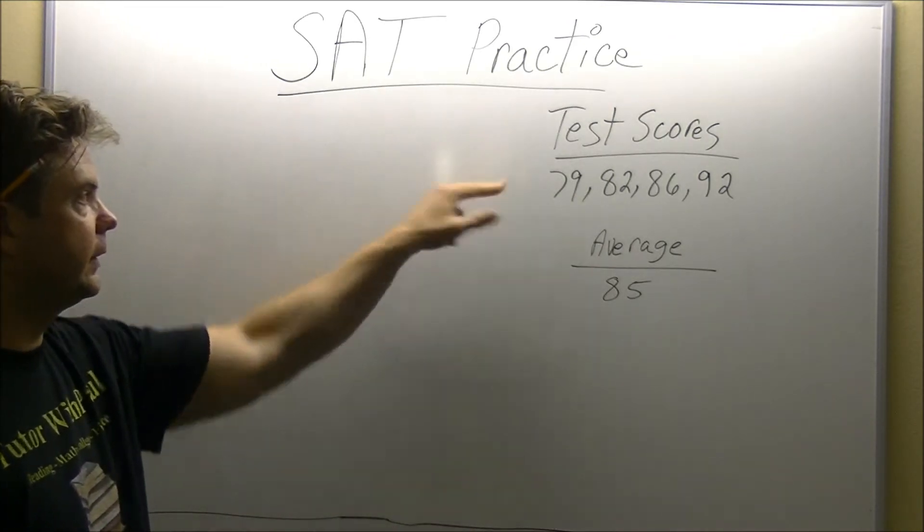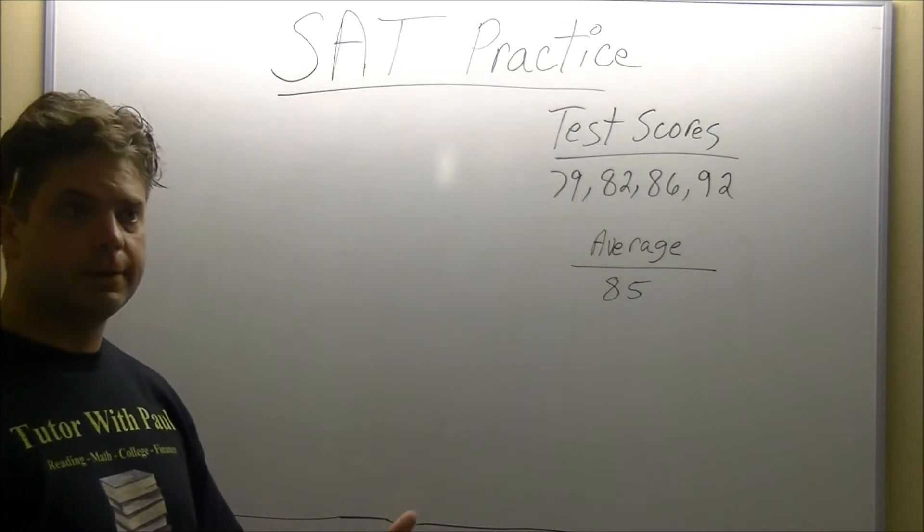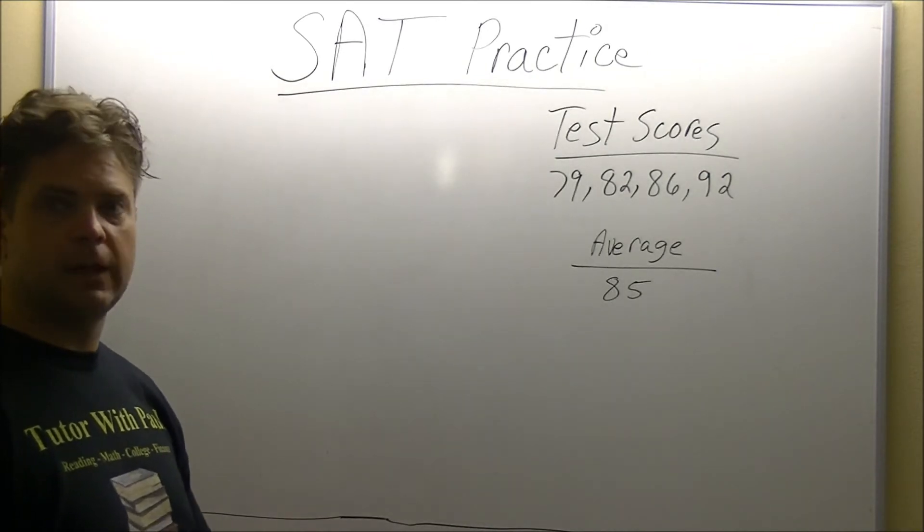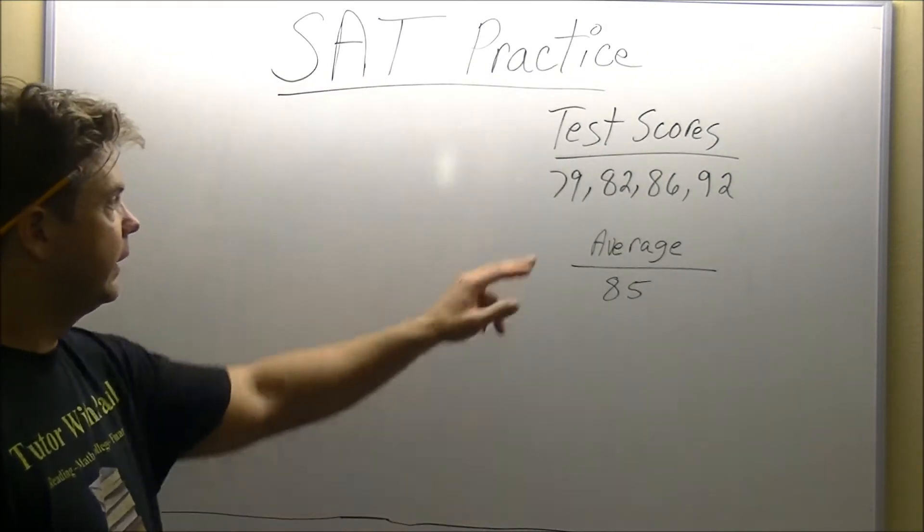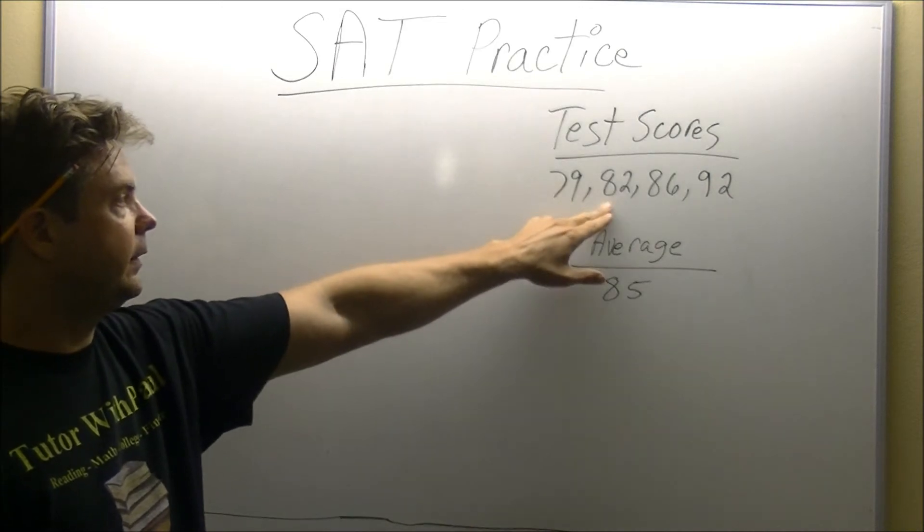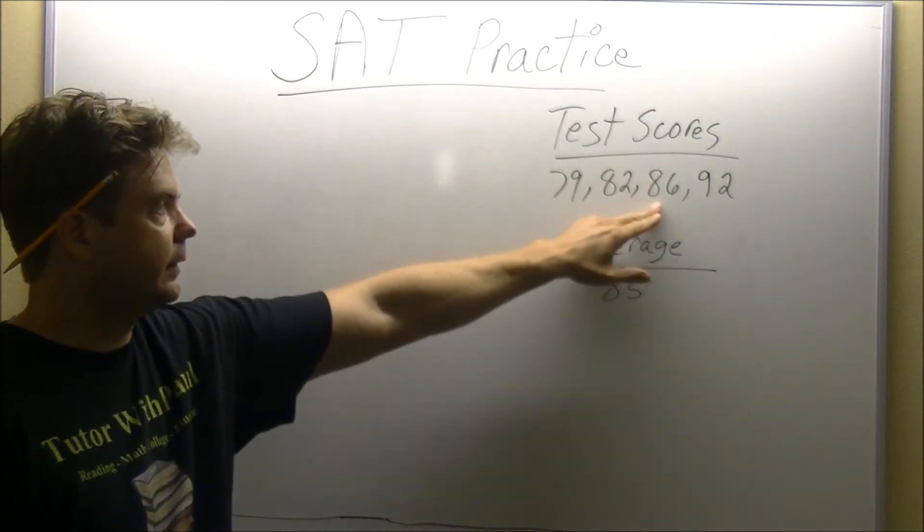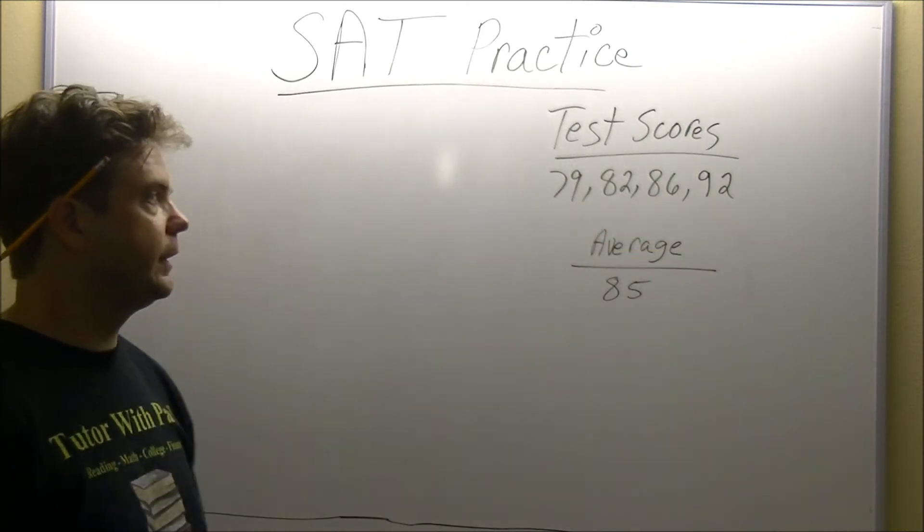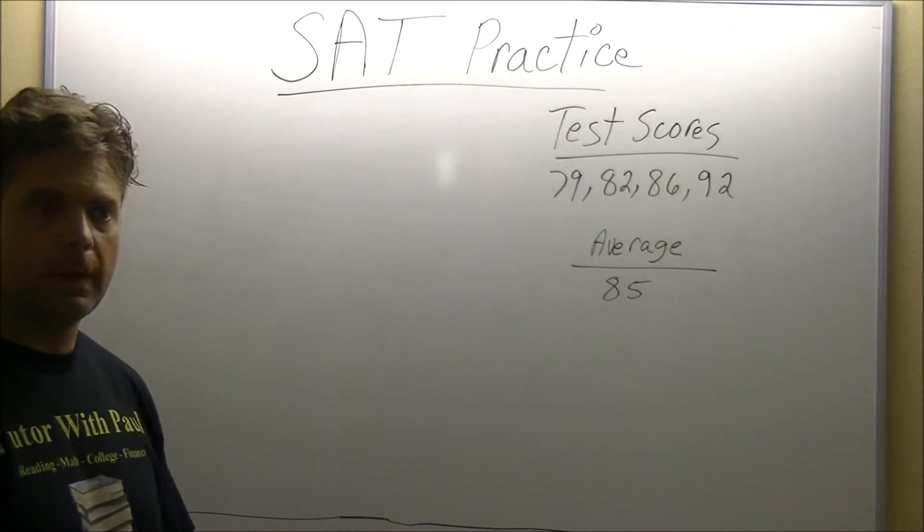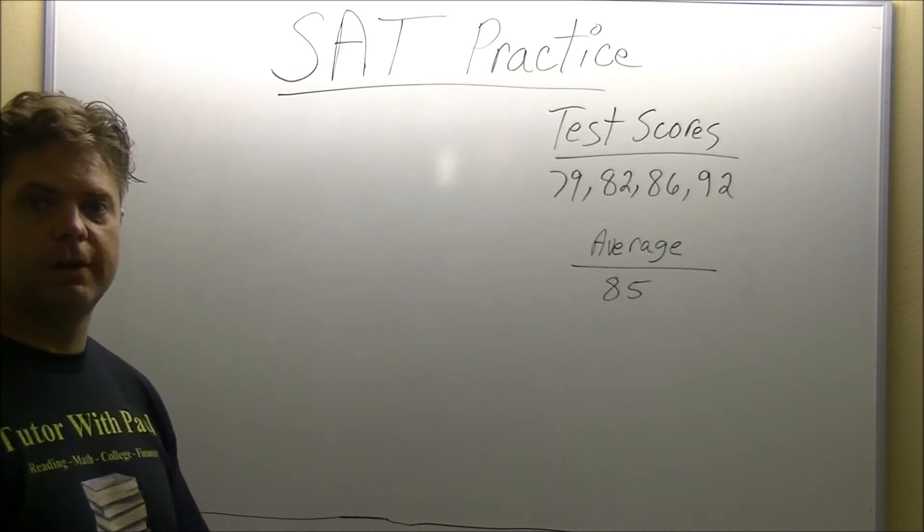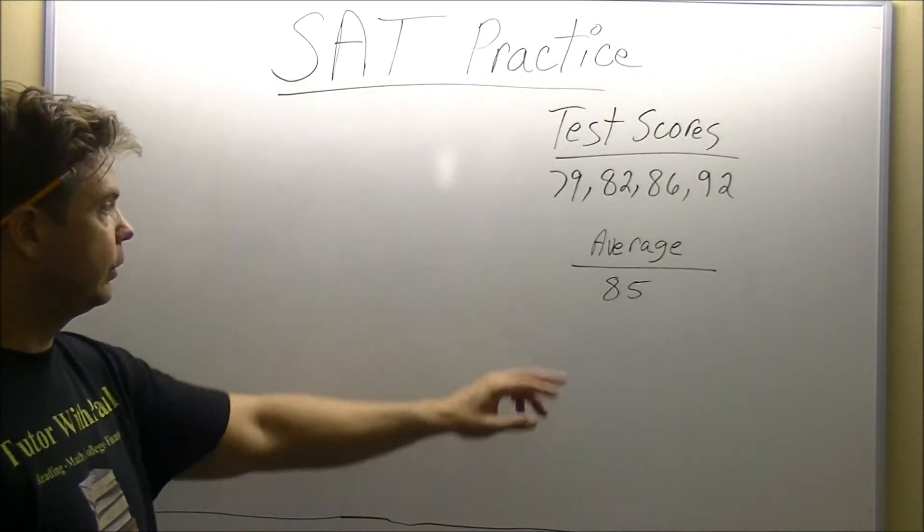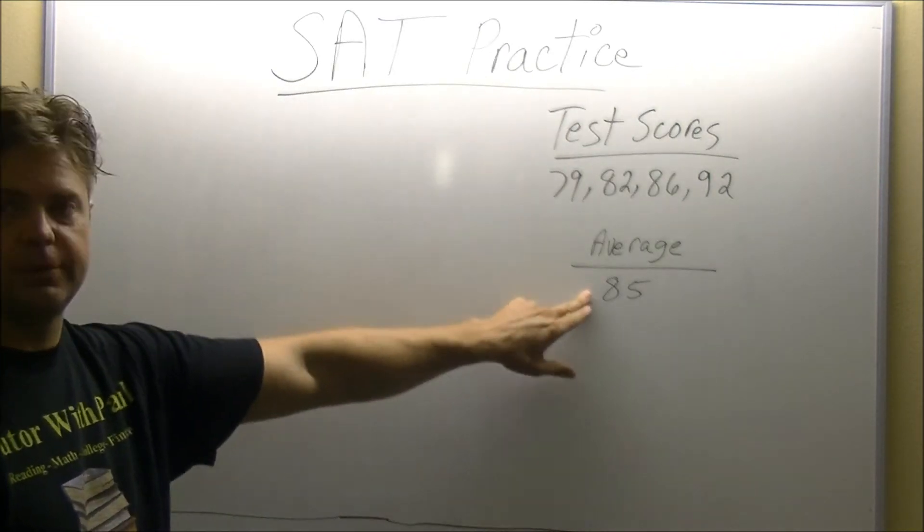They'll say something like, John took four tests, and his first score was 79, his second score was an 82, third score was an 86, and the fourth score was a 92. What does he need to score on his fifth test in order to have an 85% average?